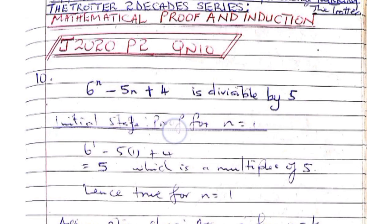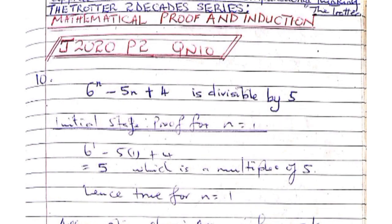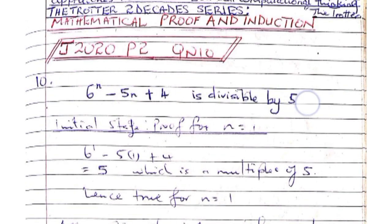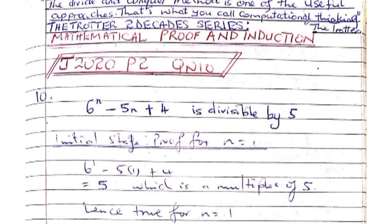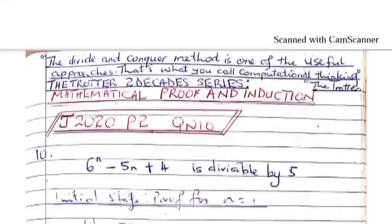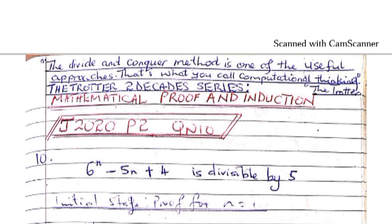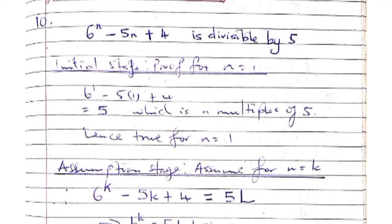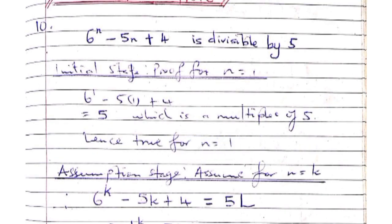As with all divisibility induction, we are going to start at the initial stage. At this stage, we want to prove that the statement holds for n is equal to 1. We take 1 and substitute it where there is n, and we get 6 to the 1 minus 5 times 1 plus 4. Then we get 6 minus 5 plus 4, which gives us 5, which is a multiple of 5. Hence, it is true for n is equal to 1.